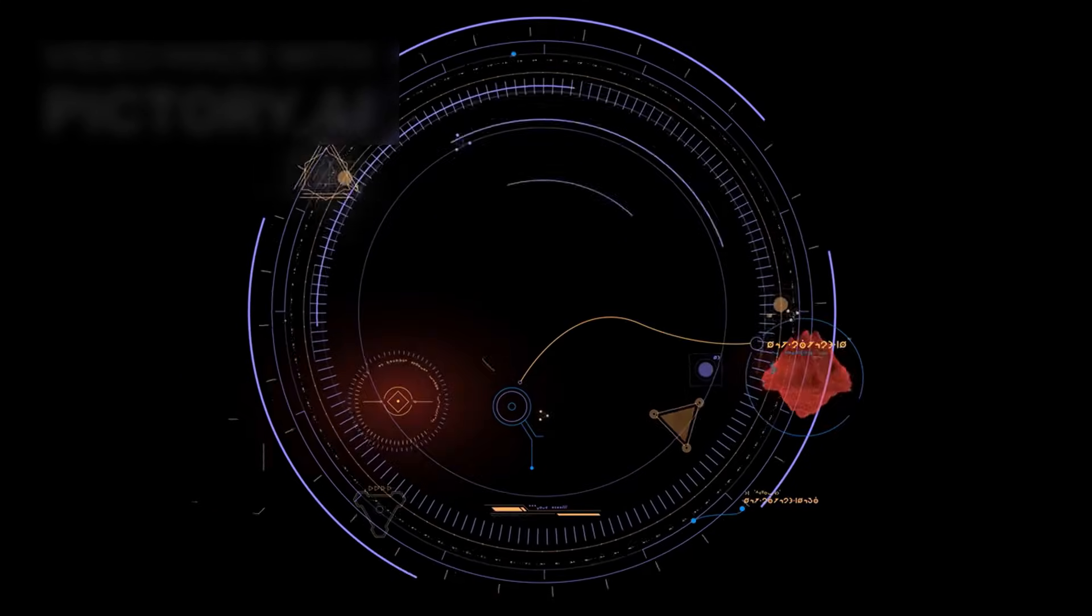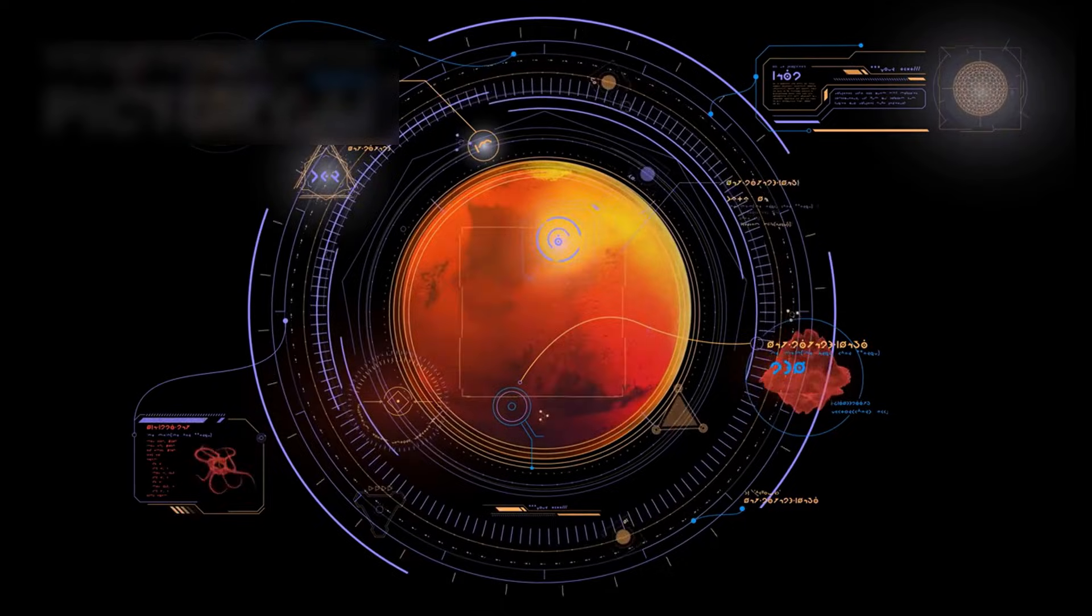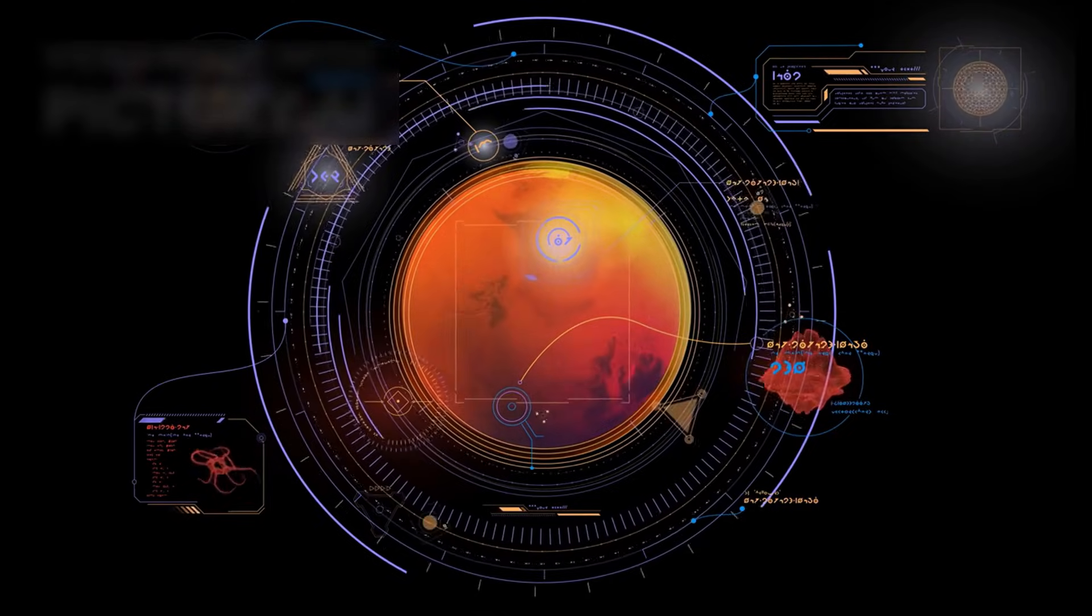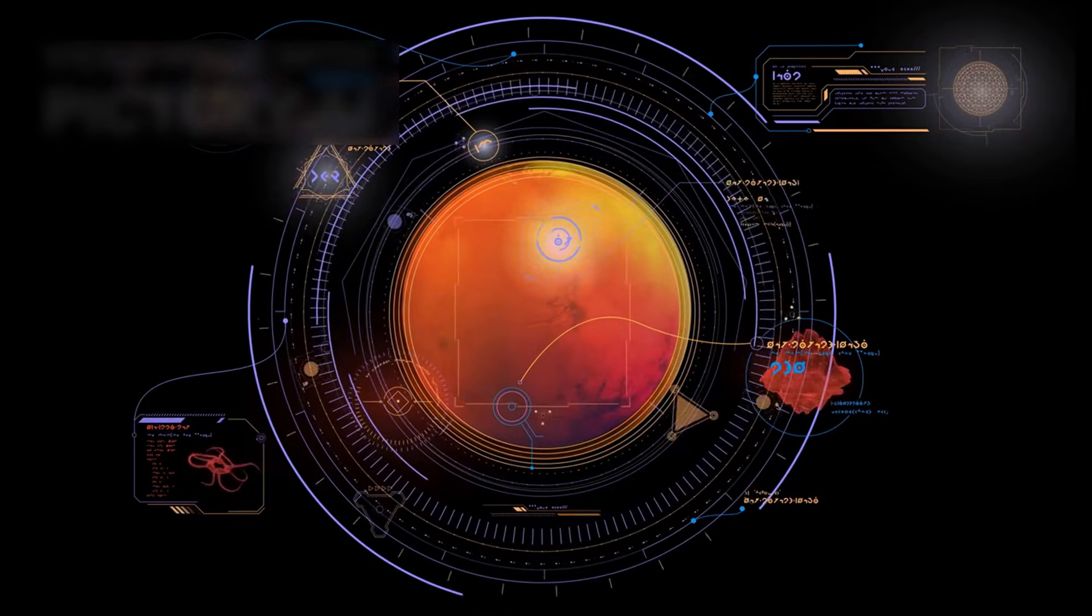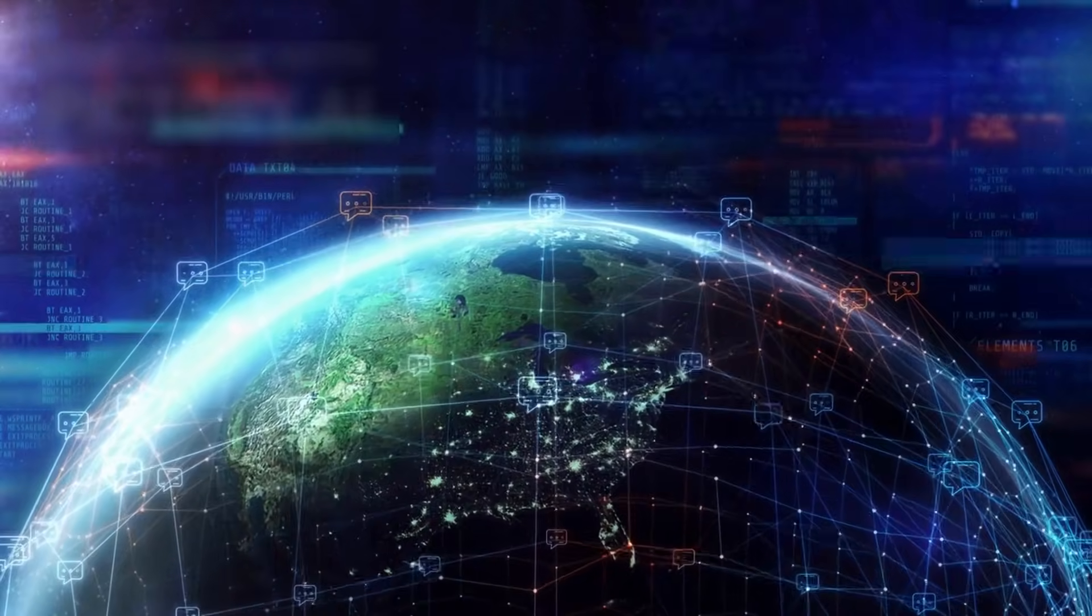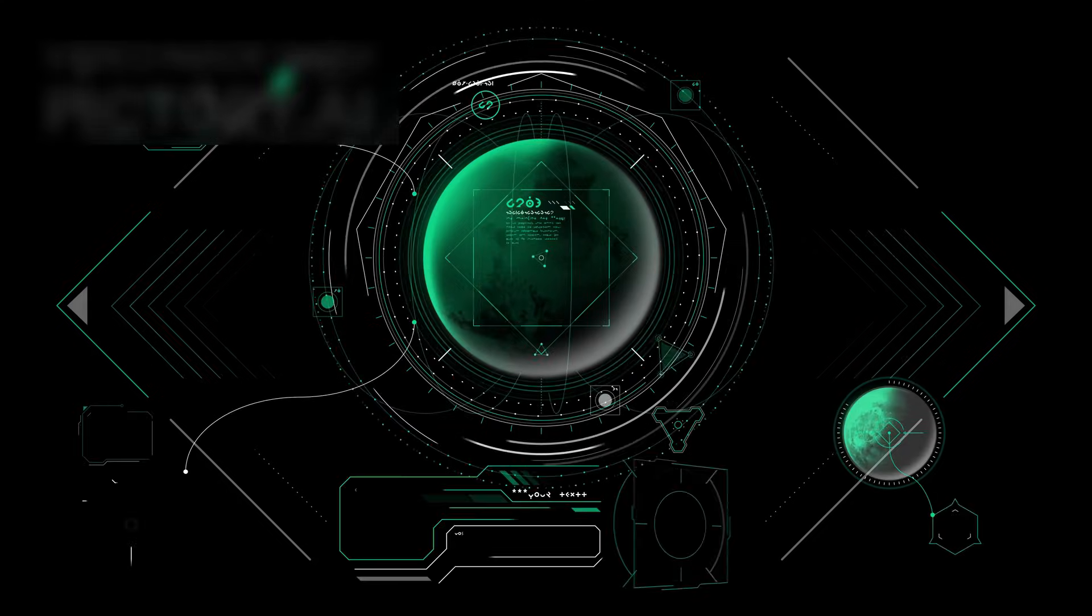One by one, its instruments awakened, each delivering something humanity had never possessed before, direct measurements from the true interstellar medium. What Voyager sends now is more than numbers. It is the first living map of interstellar space.